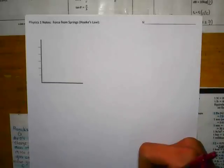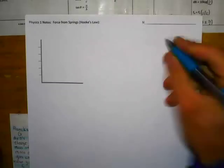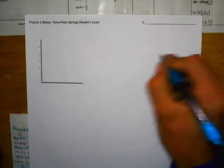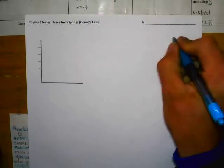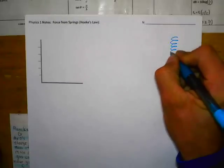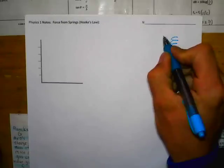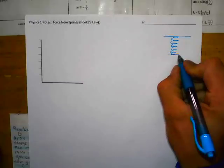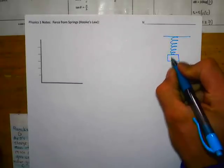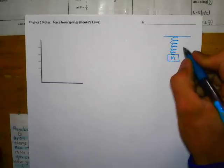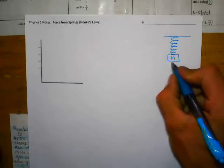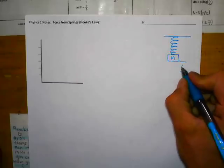Let's take a look at something called Hooke's Law. This deals with forces when we're talking about springs. Let's say we've got a spring — we'll make this a vertical spring hanging from a ceiling. It's just hanging straight down. If we add a mass to it, the spring is going to stretch down some delta x.